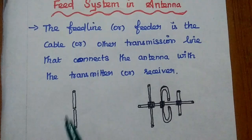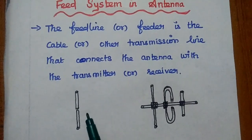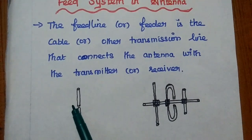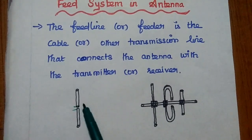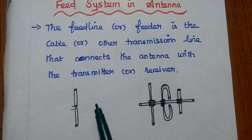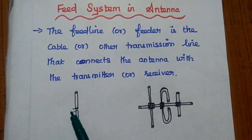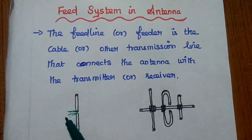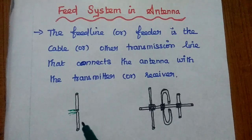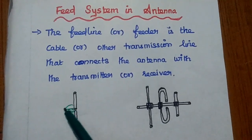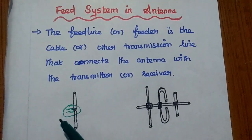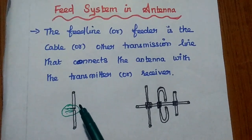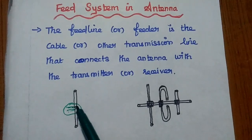Without any input it cannot transmit, it cannot receive any signal. By giving an input signal to this antenna, then only it can start radiating the signal into space. We are using either cable or other transmission line to excite the antenna — that is called a feeder. A feeder is a probe or other transmission line through which the antenna can be excited.